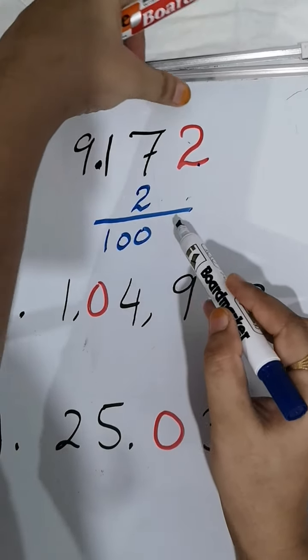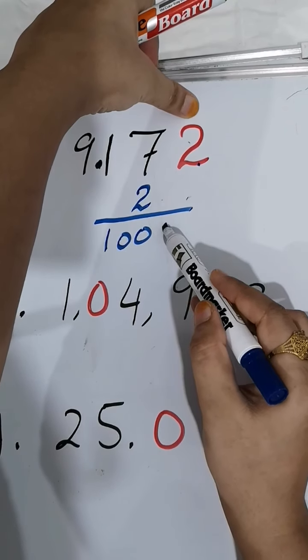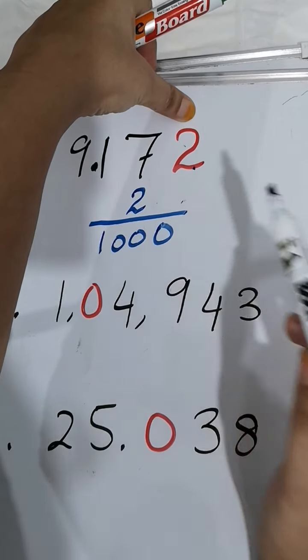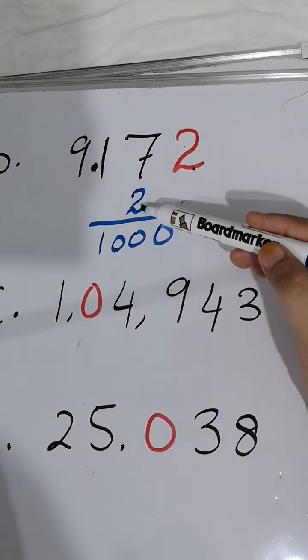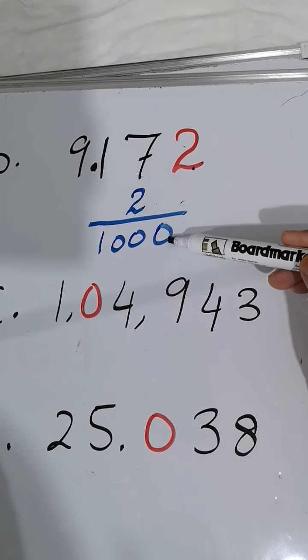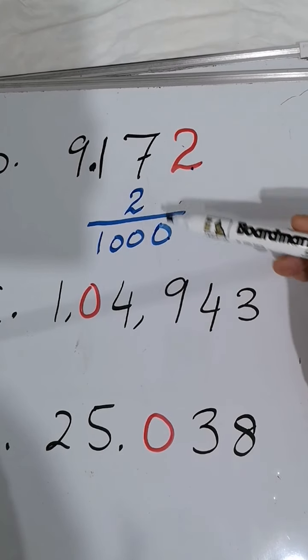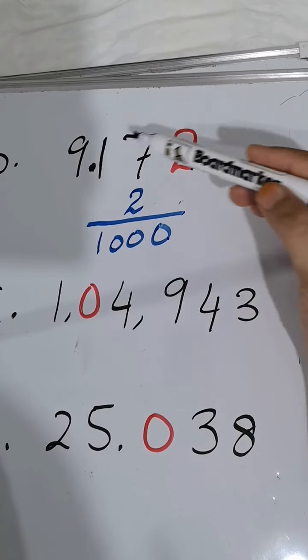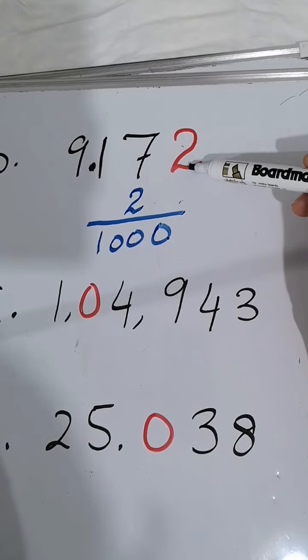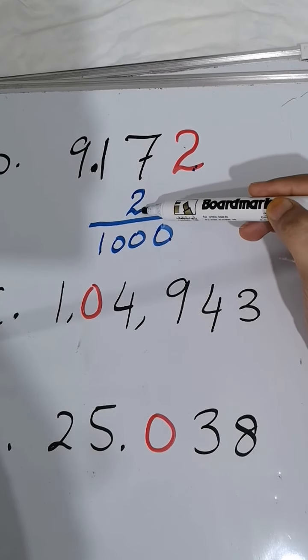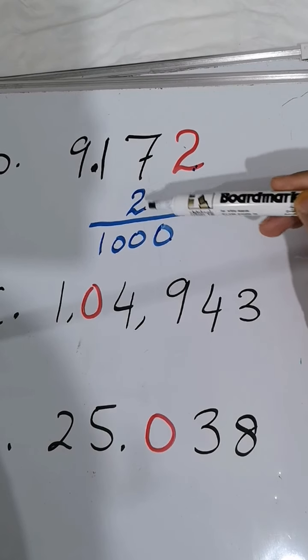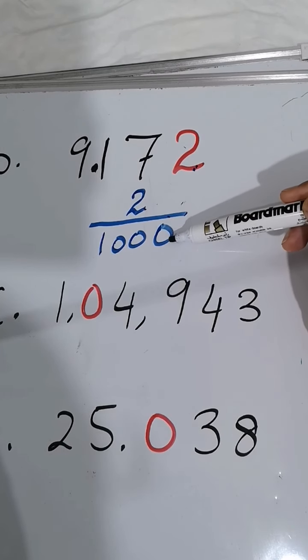At the third place is 2, so it's at the thousandths place. You will write 2/1000, two thousandths. After the decimal, the number goes on top as the numerator, and in the denominator you write the place value. So the denominator is 1000.